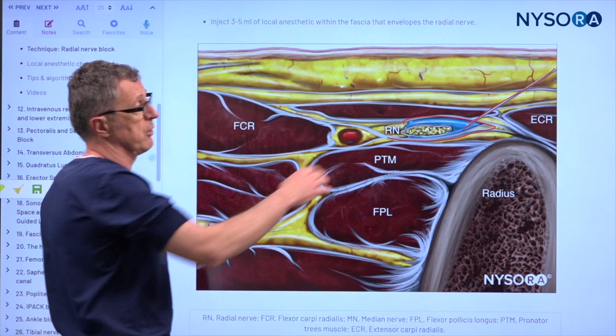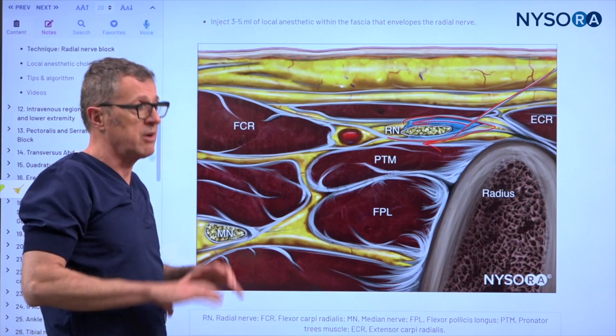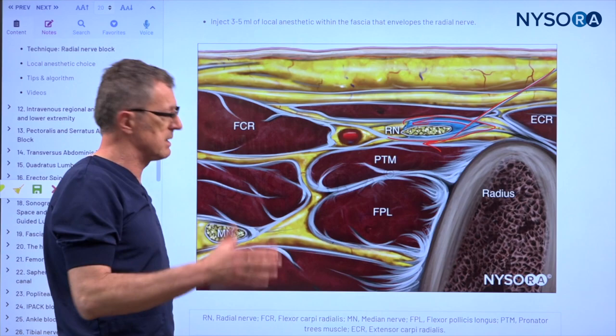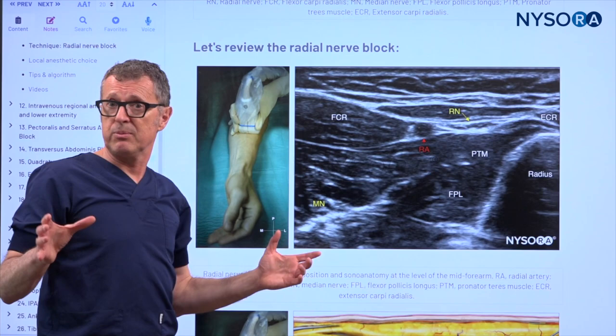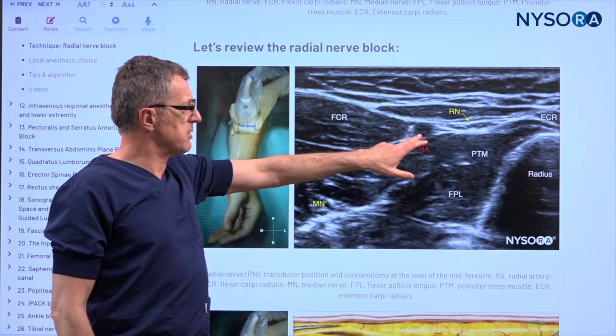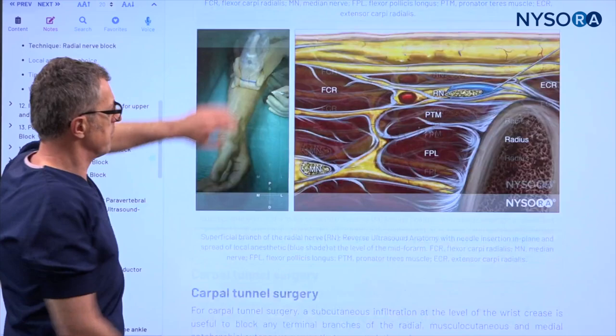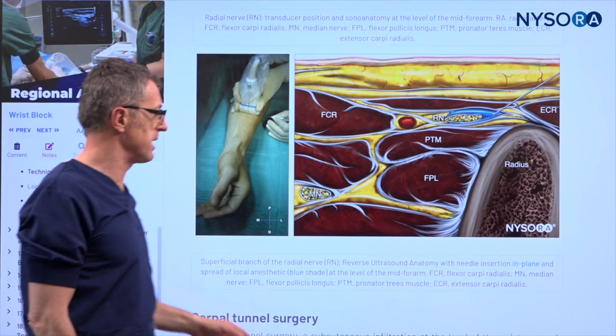This is a very superficial nerve, so you really have to slack off the pressure to allow the local anesthetic to distribute around the nerve. If you apply any more pressure, you will not be able to get that spread — you will obliterate that virtual space, presenting a problem in distribution of the local anesthetic. Let's review the superficial radial nerve block: that's the probe position, the radial artery and superficial radial nerve next to it, and the reverse ultrasound anatomy explaining what we're trying to accomplish.